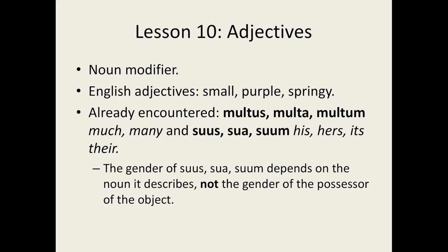We've already encountered some examples in Latin too, two of which are multus and suus. Multus is listed in all three genders, as is suus. We have multus, which is masculine, multa, which is feminine, multum, which is neuter. Similarly, we have suus, which is masculine, sua, which is feminine, and suum, which is neuter.